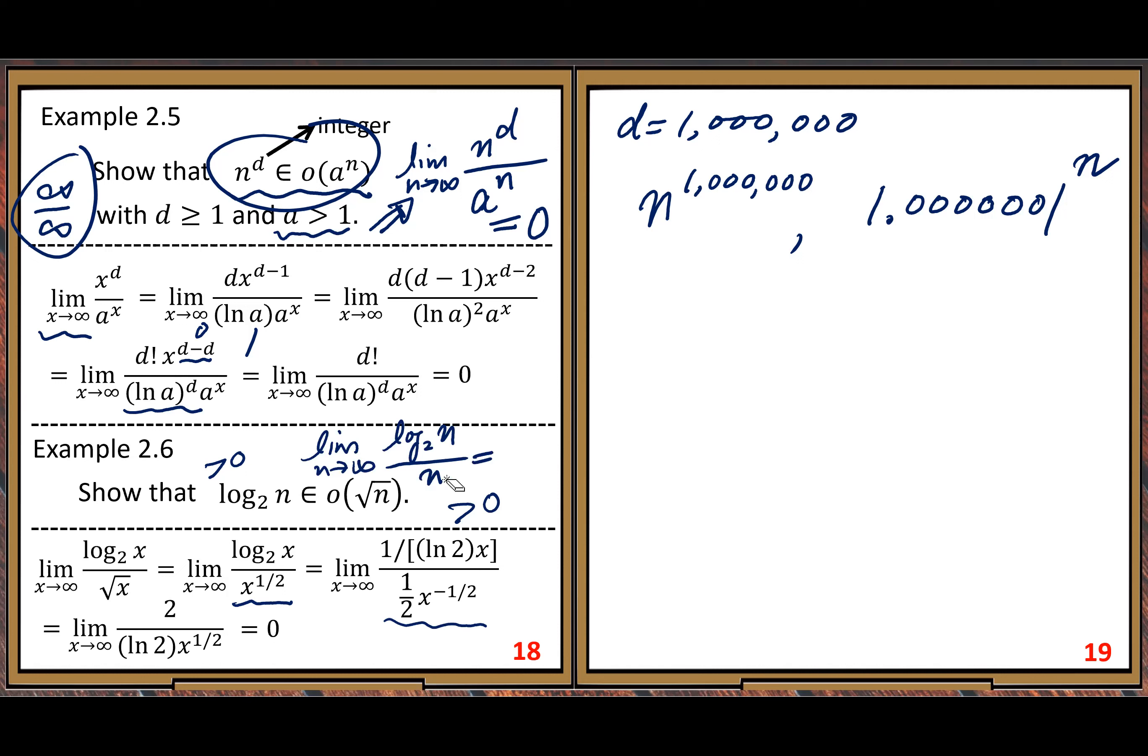This limit must be, oh sorry, root of n. This limit must be zero. So you get this little o asymptotic notation.